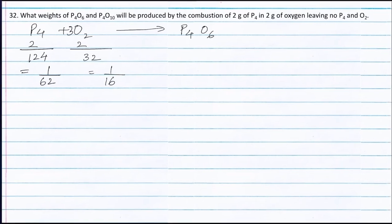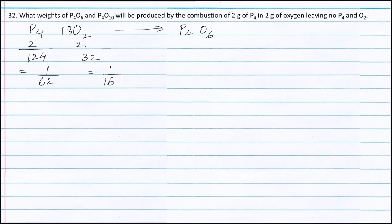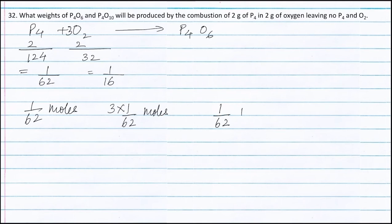As seen from the balanced equation, 1 mole of P4 reacts with 3 moles of oxygen to form 1 mole of P4O6. Therefore, 1/62 moles of P4 will react with 3 × (1/62) moles of oxygen to form 1/62 moles of P4O6.